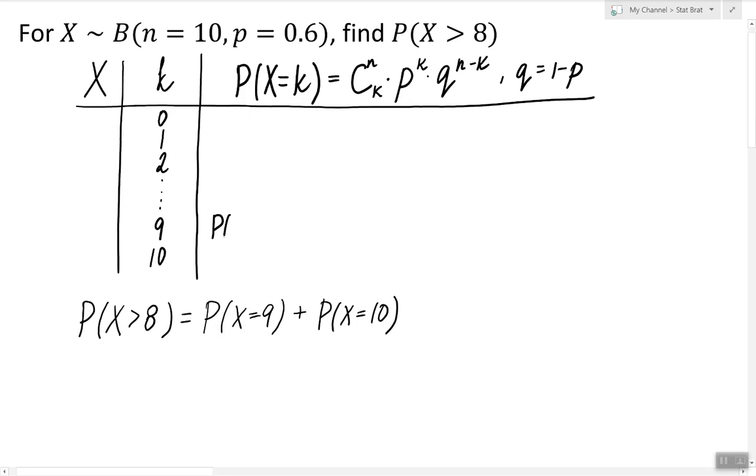Probability of X being equal to 9 is 10 choose 9 times 0.6 to the power of 9 times 0.4 to the power of 1, and probability of X being equal to 10 is 10 choose 10 times 0.6 to the power of 10 times 0.4 to the power of 0.